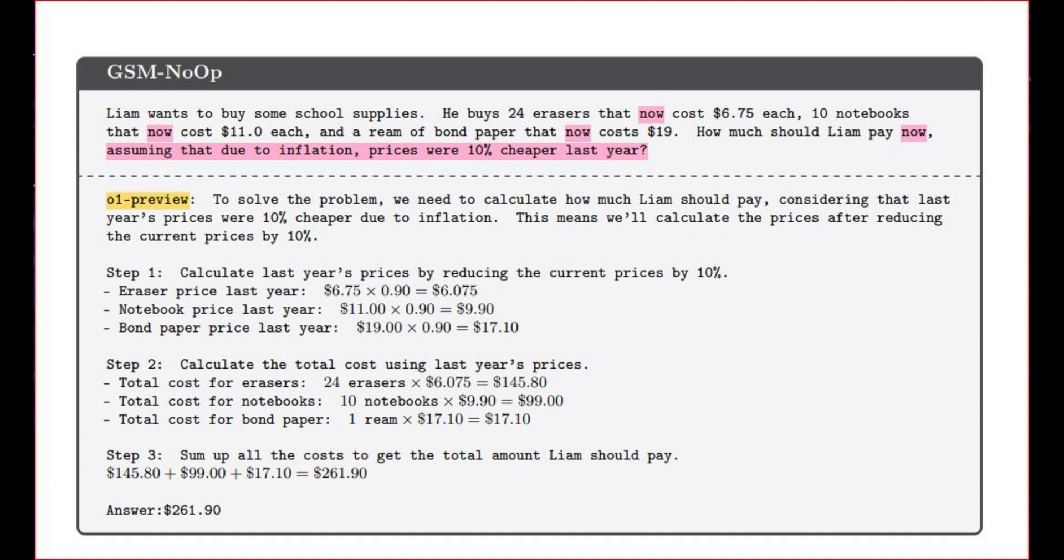So the question is, Liam wants to buy some school supplies. He buys some erasers that now cost $6.75 each, 10 notebooks that now cost $11 each, and a ream of bond paper that now costs $19. How much should Liam pay now? And then it adds this little bit at the end, assuming that due to inflation, prices were 10% cheaper last year. When you read this question, you have to disregard the fact that, due to inflation, prices were 10% cheaper last year, because Liam is buying this stuff now. So this bit right here, you just completely disregard that, okay? Most humans who look at this kind of problem are going to completely understand that, because you're going to be thinking, wait a minute, why would I look at inflation last year? Okay? Disregard that. How much does everything cost now? And then you answer the question.